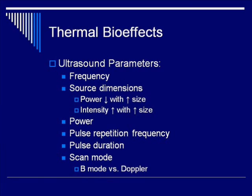Power, I think, is relatively straightforward — more power, more heating. Pulse repetition frequency, which is how often the ultrasound is pulsing: increased pulse repetition means more pulses, equals more exposure, equals more heating. Pulse duration works the same way — the longer the pulse is, the more exposure you get. And finally, the scan mode you're in really affects the amount of bio-effects you can get. If you're in a scanning mode such as B mode, you will have relatively low exposure compared to power Doppler or spectral Doppler, which involve large amounts of ultrasound going into a small area — the area that you're checking out with Doppler specifically.